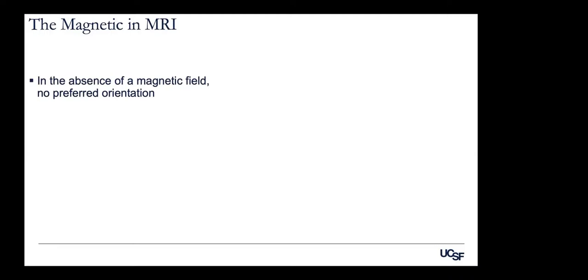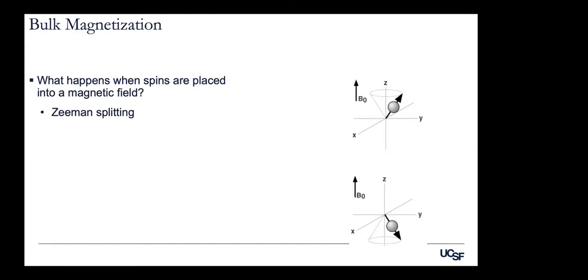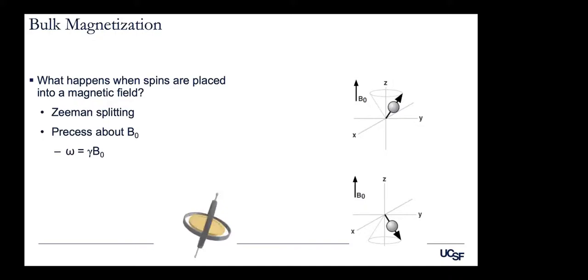Thinking about MRI in general: in the absence of a magnetic field, the spins have no preferred orientation and therefore no net magnetization. But when placed into a magnetic field, spin-half nuclei undergo Zeeman splitting — two different energy states. They also precess around the main magnetic field with the Larmor frequency given by gamma, the gyromagnetic ratio, and B0, the field strength. These notes will be online in PDF version, so you don't need to worry too much about writing everything down.